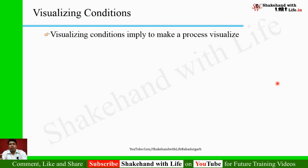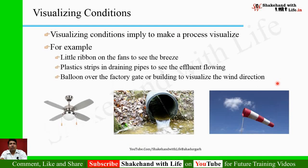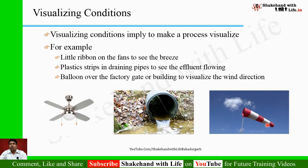Visualizing conditions implies making a process visible — to show that the process is actually working. For example, put a little ribbon on fans to see the breeze the fan is producing. Put plastic strips in draining pipes to see the effluent flowing. You can also use a balloon on the factory gate or building to visualize wind direction.